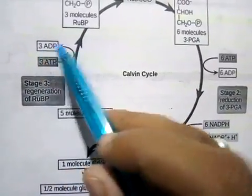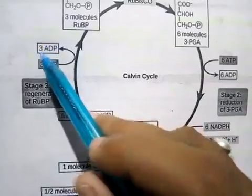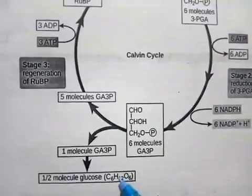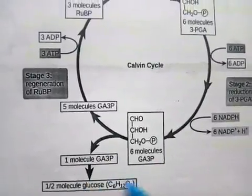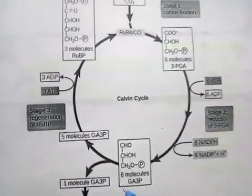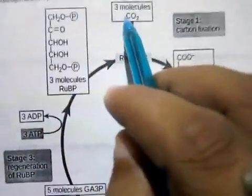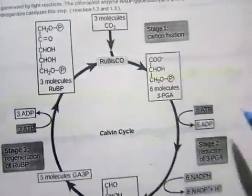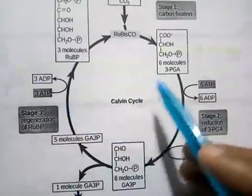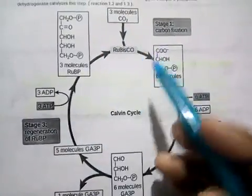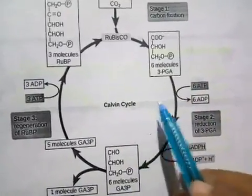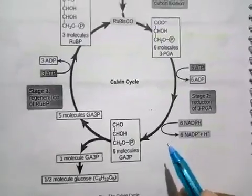3 ATP are consumed and converted to 3 ADP during regeneration. Half a molecule of glucose is formed per cycle turn. To form one complete glucose molecule, 6 molecules of CO2, 18 ATP, and 12 NADPH are required.